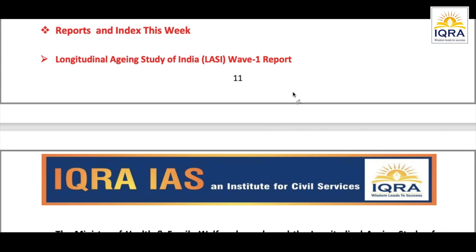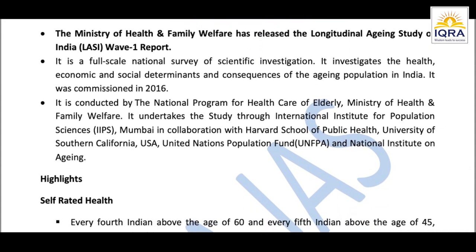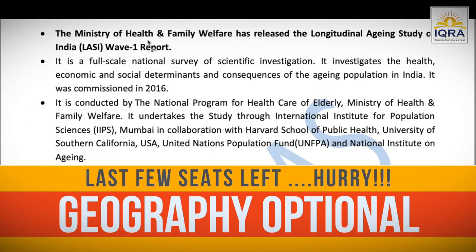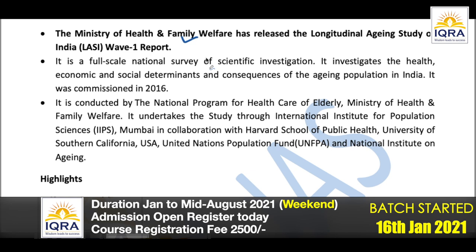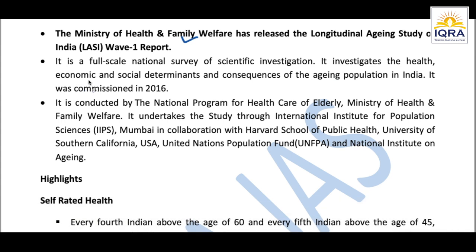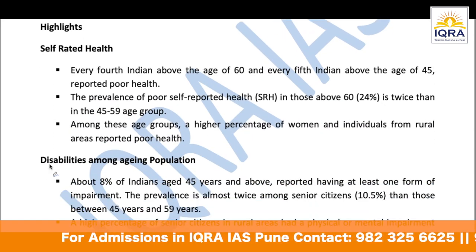This week we also have several important reports and indices. Make sure to list all reports and indices in the news and memorize who releases them. First: the Longitudinal Ageing Study of India Wave 1 Report, released by the Ministry of Health and Family Welfare. It investigates health, economic, and social determinants and consequences of the aging population in India. Key highlight: every fourth Indian above age 60 and every fifth Indian above age 45 reported poor health, with higher percentages among women and rural individuals.